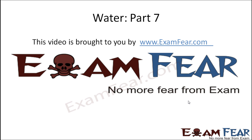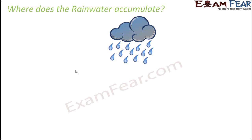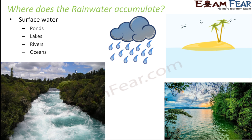Hello friends, this video on water part 7 is brought to you by examfear.com - no more fear from exam. Now the question is: when it rains, there is so much water coming to the ground, so where does the rainwater actually go? Some part of the rainwater remains on the surface, on the land, and then from land it might flow into rivers or streams, going to various water bodies like ponds, lakes, rivers, and oceans.